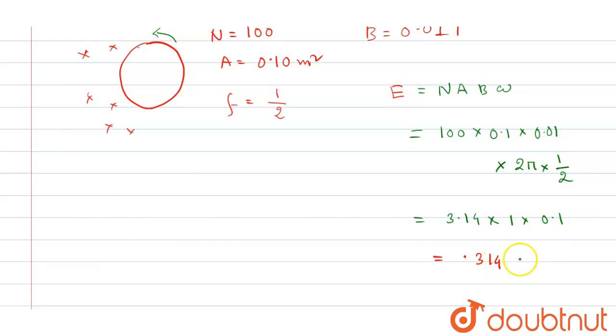0.314 volt. This is the emf induced in the coil, so our final answer will be 0.314 volt. Thank you.